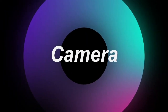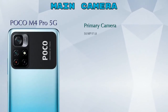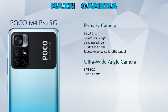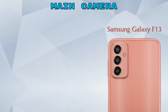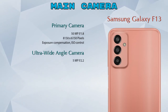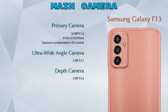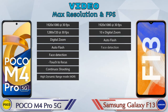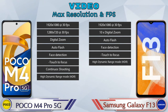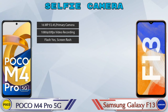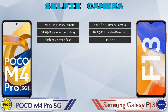Now let's talk about cameras. The M4 Pro 5G has two rear cameras — a primary camera and an ultra-wide angle camera. The Galaxy F13 has three rear cameras — a primary camera, an ultra-wide angle camera, and a depth camera. For video, the M4 Pro 5G has 8 different types of features and the Galaxy F13 has 6. Both phones have a single front selfie camera with three different features available.